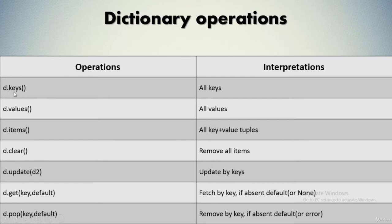The keys operation provides you with all the keys present inside a dictionary. The values operation provides all the values present inside that dictionary. The items operation gives you key plus value pairs present as tuples. The clear operation clears your dictionary entirely and removes all items. The update operation updates your existing dictionary with another dictionary.